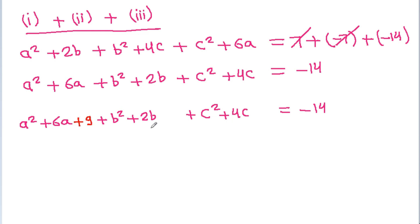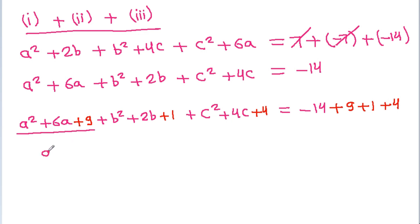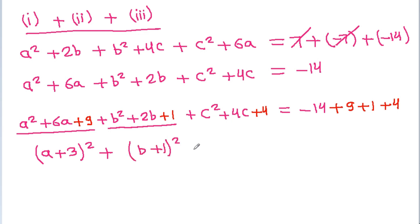That gives minus 14. If we add 9, 1, and 4 to both sides, then a squared plus 6a plus 9 is (a plus 3) whole square, plus b squared plus 2b plus 1 is (b plus 1) whole square, plus c squared plus 4c plus 4 is (c plus 2) whole square, equal to minus 14 plus 9 plus 1 plus 4, which is 0.